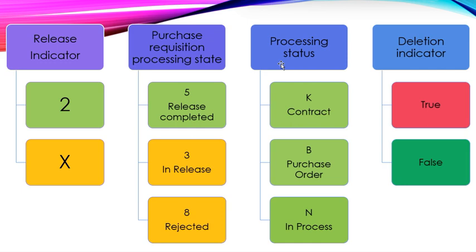Now to the final indicator, deletion indicator. If it is showing you true, then it means your purchase requisition has been deleted or one or more line items of your purchase requisition has been deleted. Otherwise it will show you false.